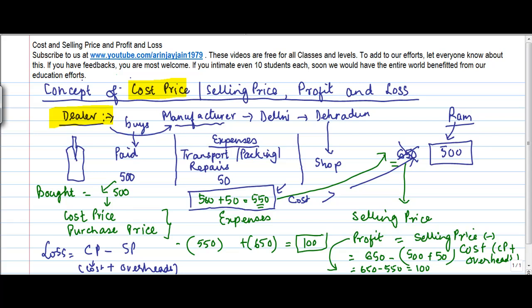Cost price is the price at which I buy a particular item plus the expenses that I incur. Selling price is what I receive from the buyer of my goods. Now this can be more or this can be less.